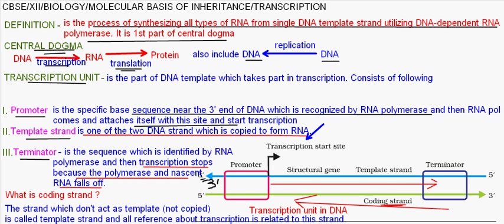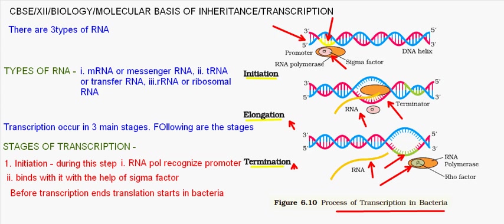Now coming to the types of RNA. We need to learn the types of RNA in transcription because all types of RNA are synthesized during transcription, but the main end product of transcription is mRNA — messenger RNA. Another type is tRNA, or transfer RNA. The third type is rRNA, or ribosomal RNA. tRNA acts as a carrier during translation, and rRNA acts as a site for translation.